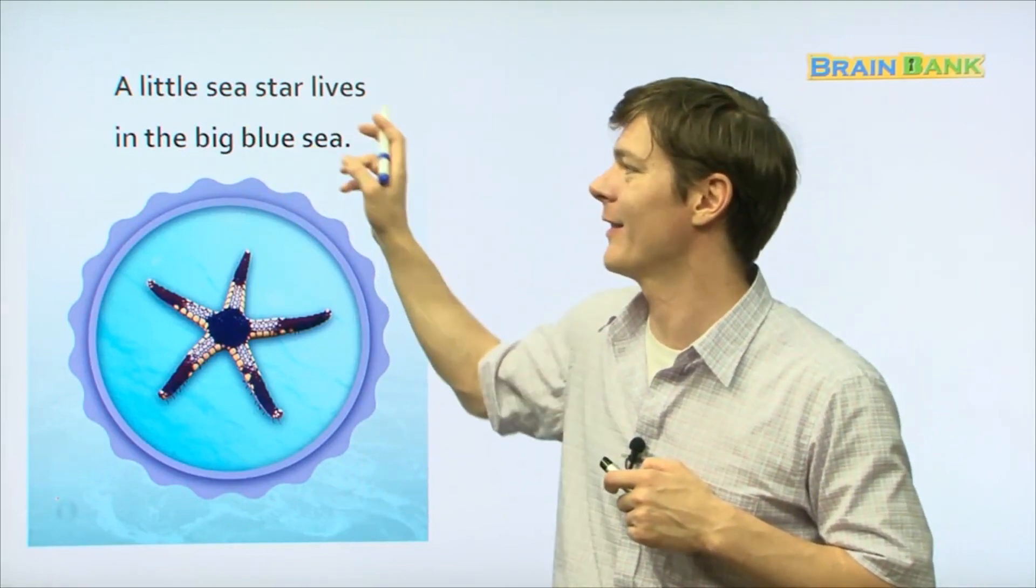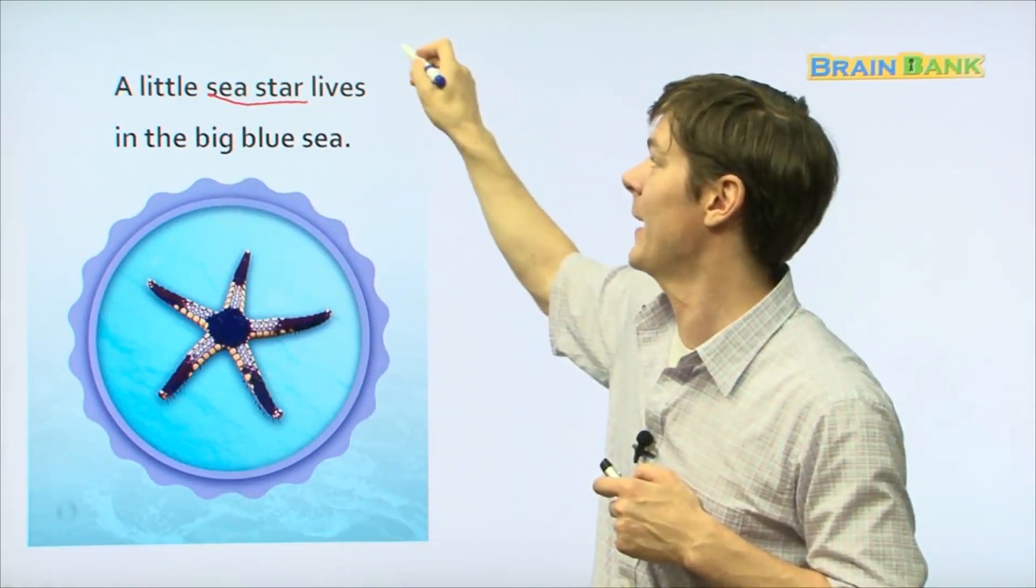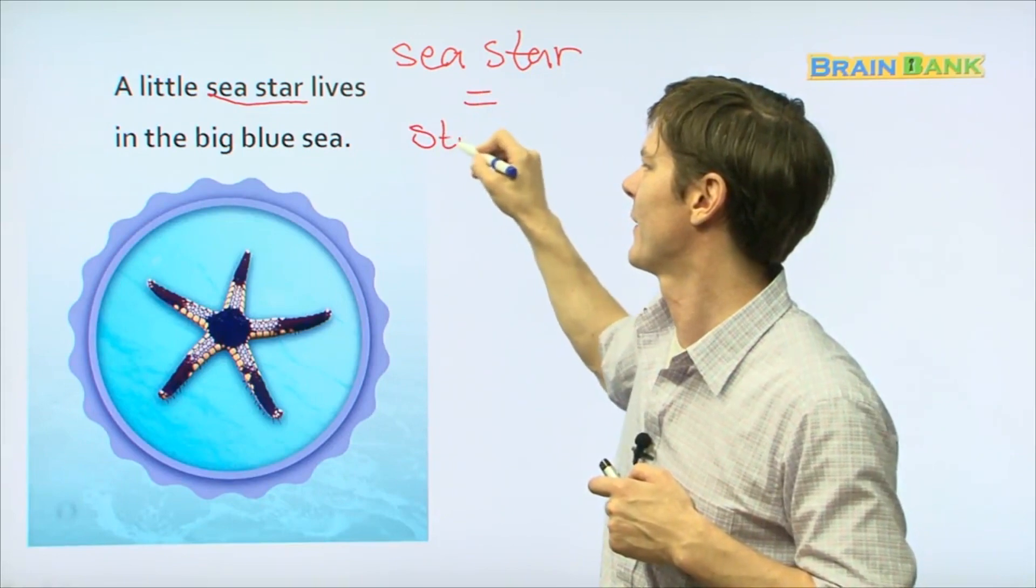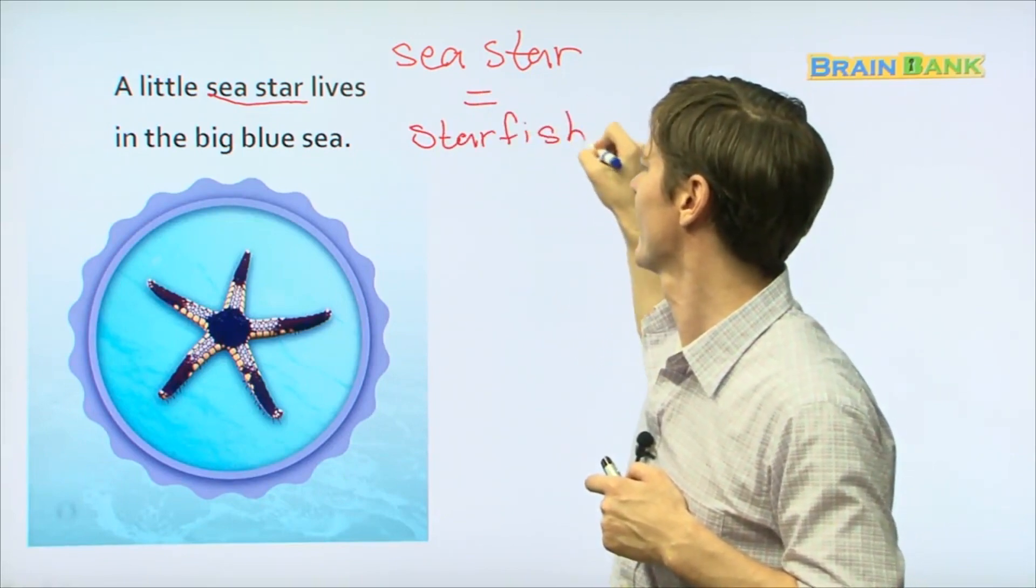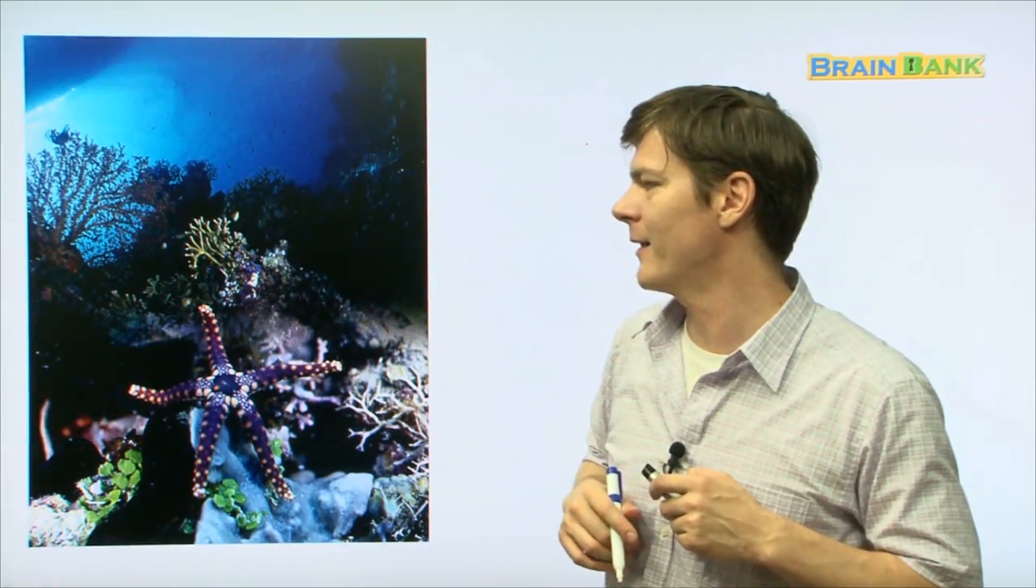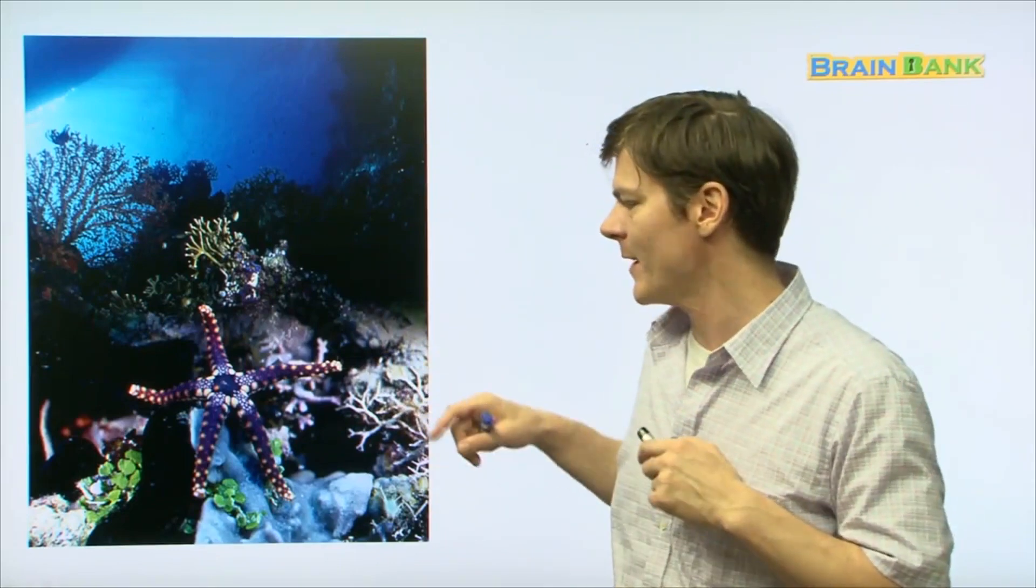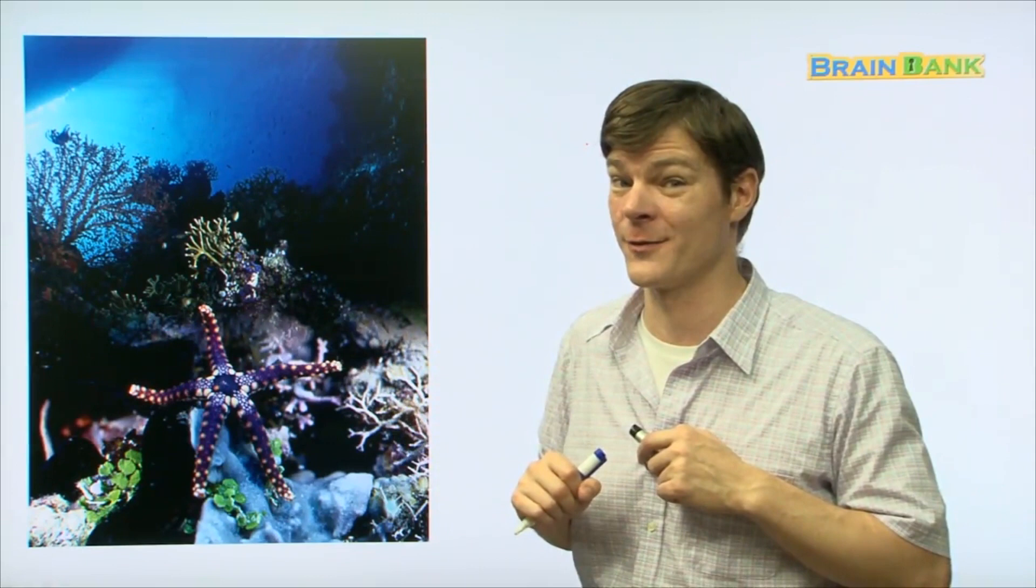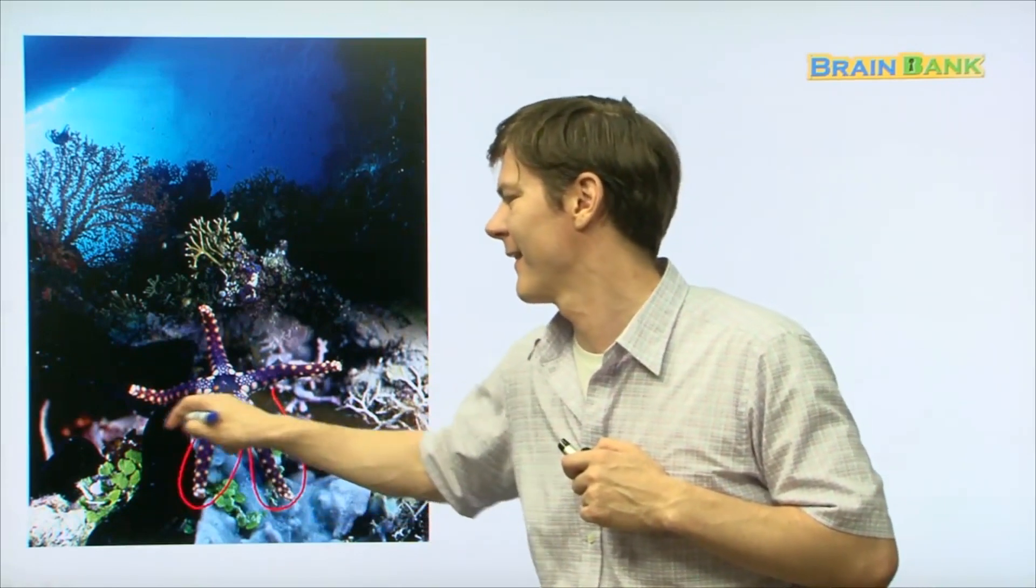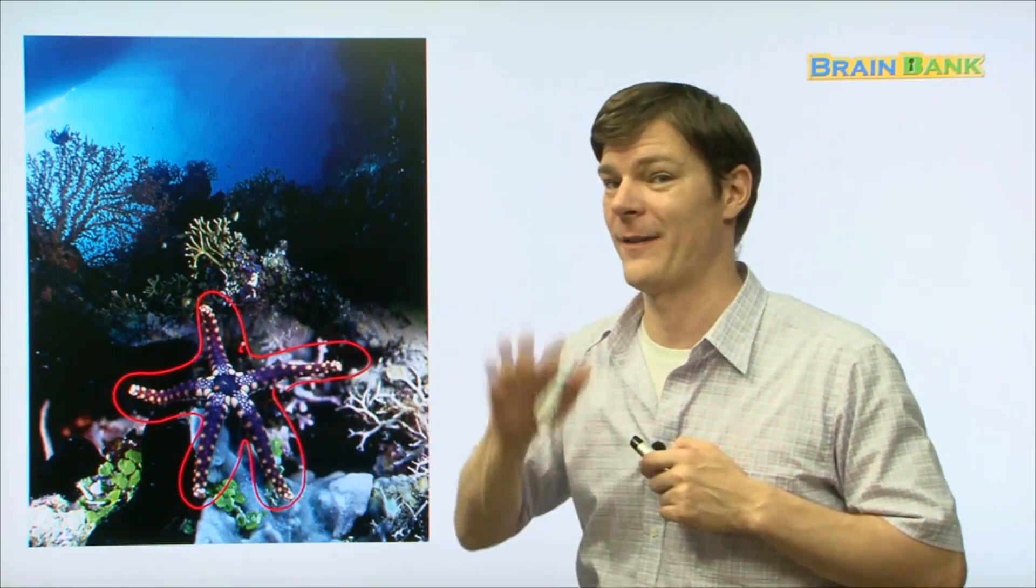A little sea star lives in the Big Blue Sea. And let me just say, sea star is the same as starfish. It's just a different way to say the same word. And there he is on the bottom of the ocean floor crawling around looking for food. We can see him right there. He's really pretty, right? He's very colorful. How many legs does he have? One, two, three, four, five. Five legs.